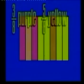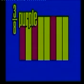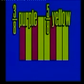Even if we move the pieces around, three-eighths is still the fraction of purple paper, because three of the eight equal parts are still purple. Five-eighths is still the fraction of the yellow part, because five of the eight equal parts are still yellow.